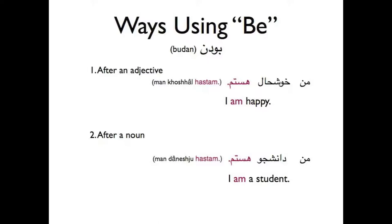In Persian, there are two forms of verb be. One is the long form and the other is the short form of verb be. The first thing we want to remember is that in Persian, verbs come at the end of the sentences. Basically there are two ways in which we usually use verb be: after an adjective, or after a noun.